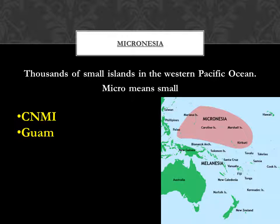Micronesia — these are thousands of small islands in the Western Pacific Ocean; that's the pink area on the map. Micro, as you know, means small. For this, we're going to cover the CNMI, which means the Commonwealth of Northern Marianas Islands — a territory part of the United States — and Guam, another territory part of the United States. Both of them are part of the Marianas Islands.